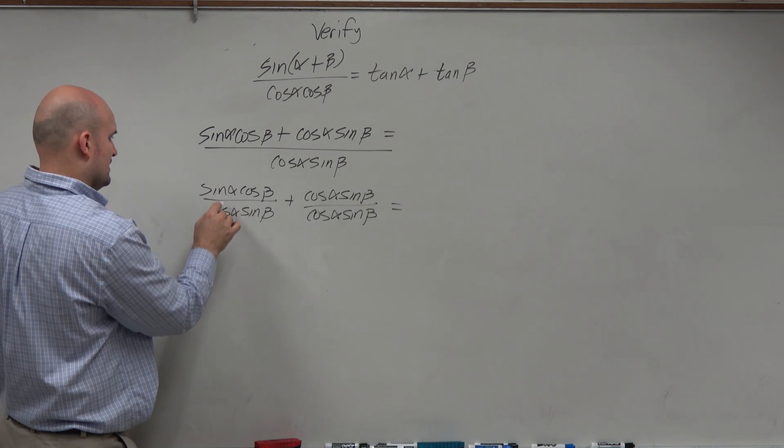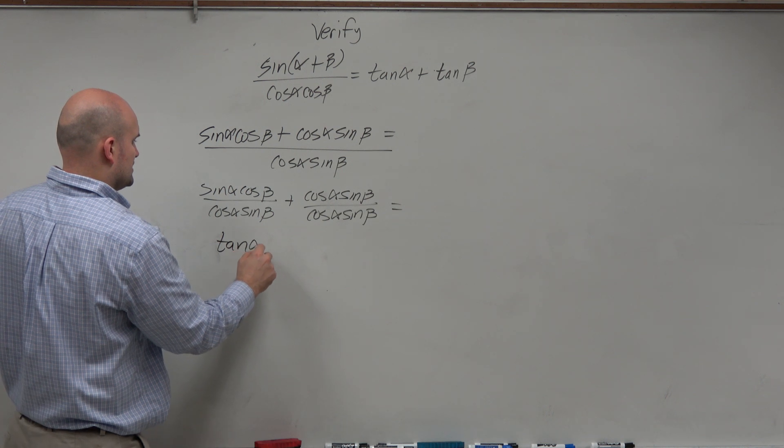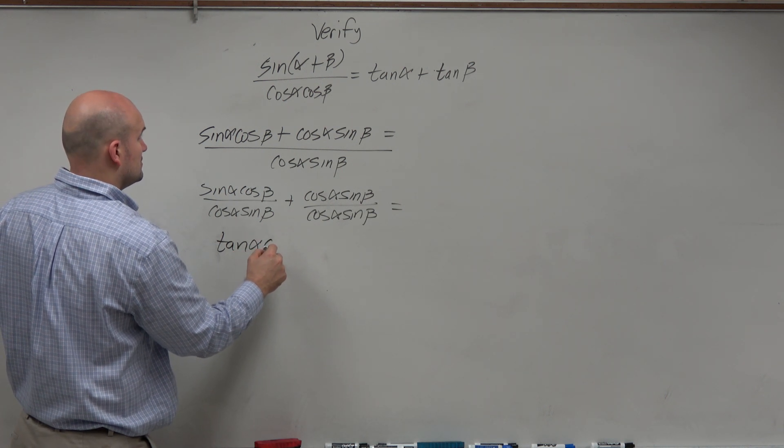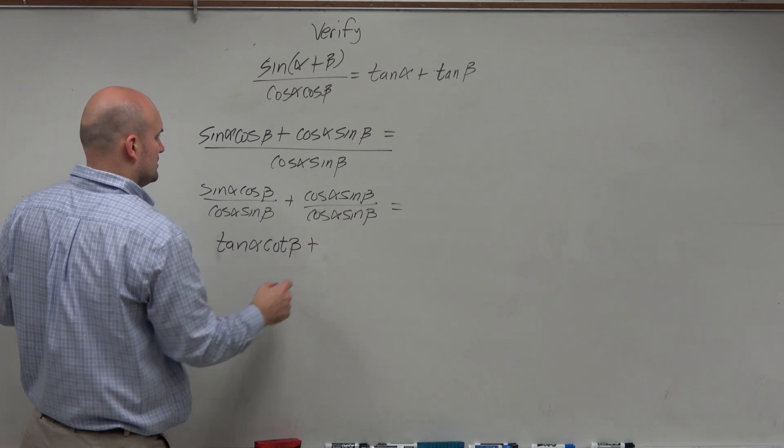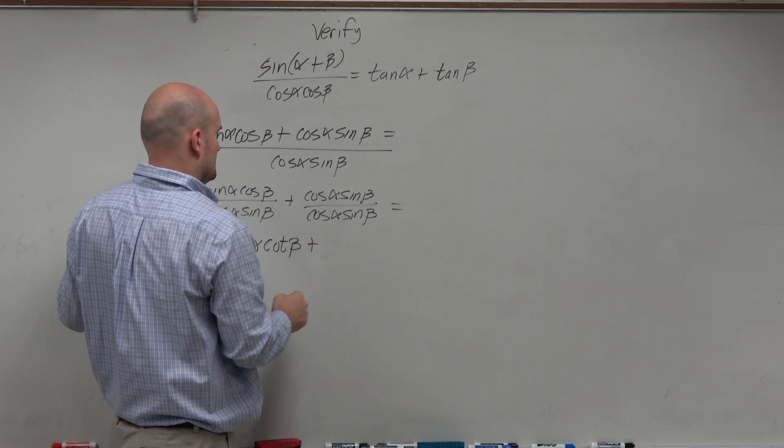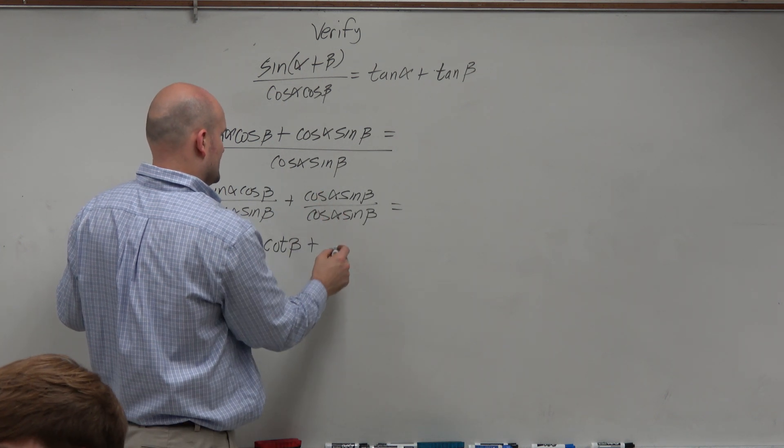So this gives me a tangent times cotangent. So tangent of alpha, cotangent of beta plus, and then this gives me a—that becomes a one.